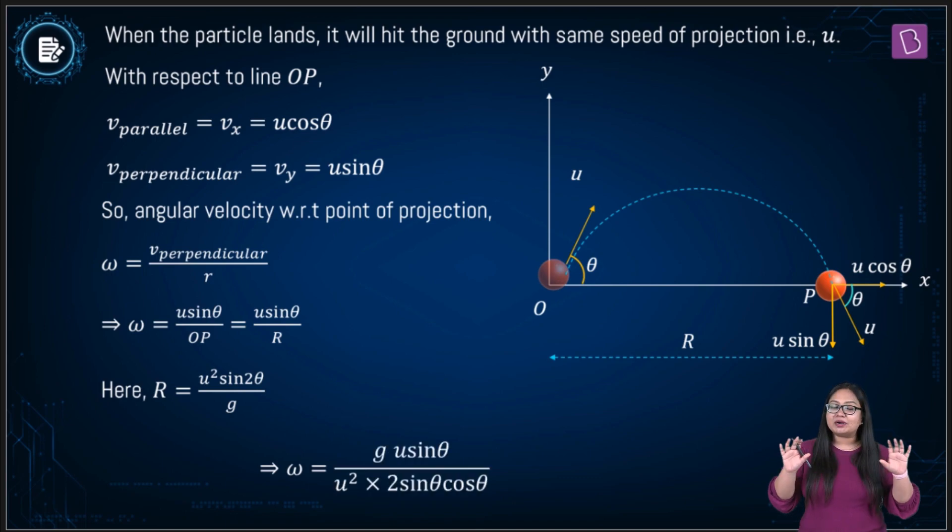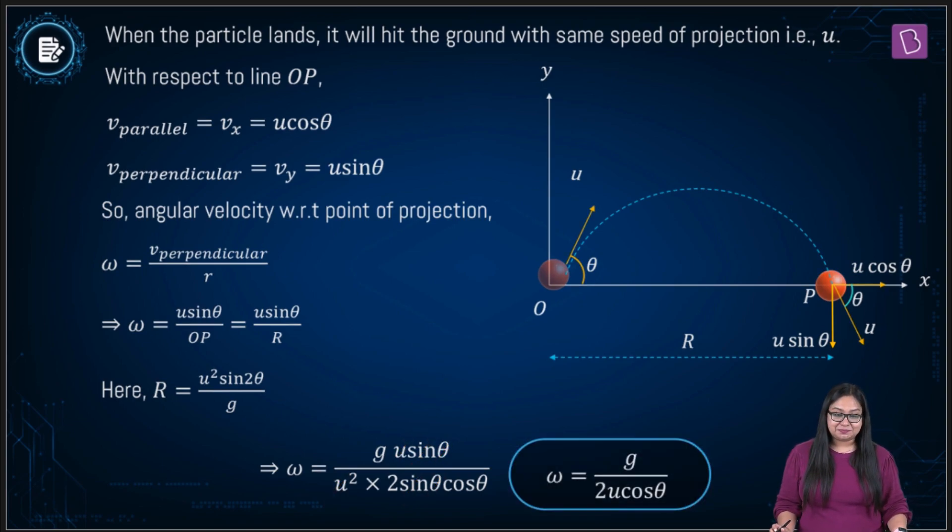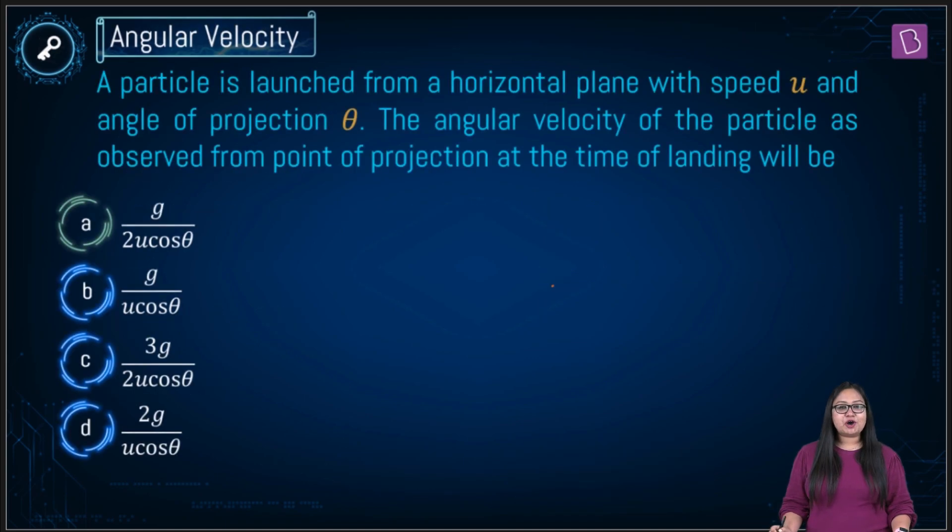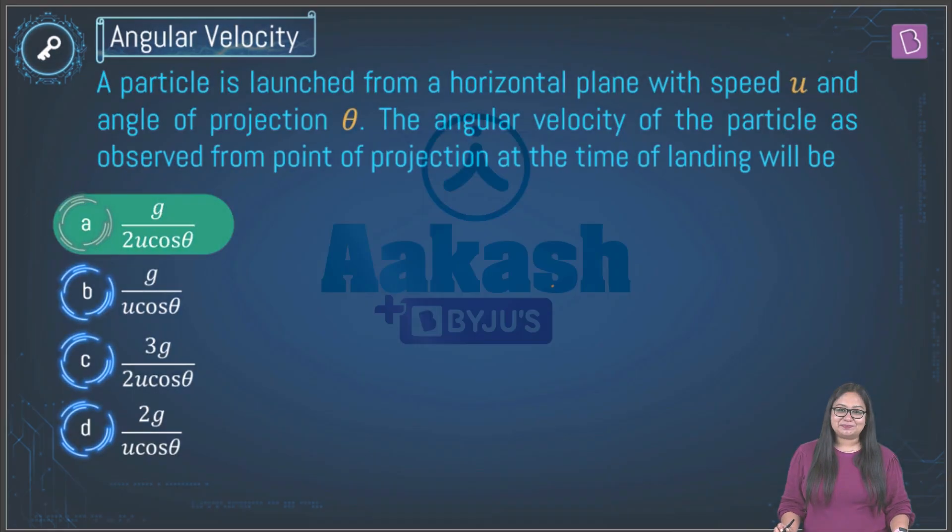Sine 2 theta can be broken down into 2 sine theta cosine theta. Cancelling out common factors we immediately get omega as g upon 2 u cosine theta. So I can see option a is the correct answer.